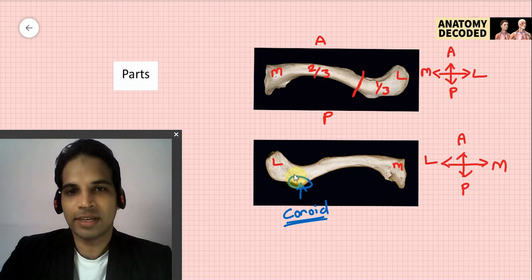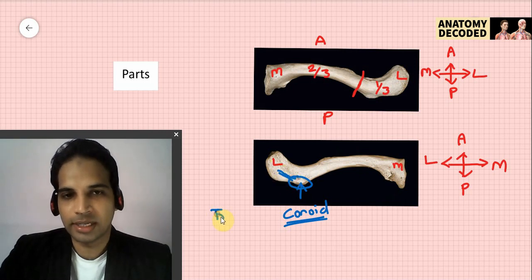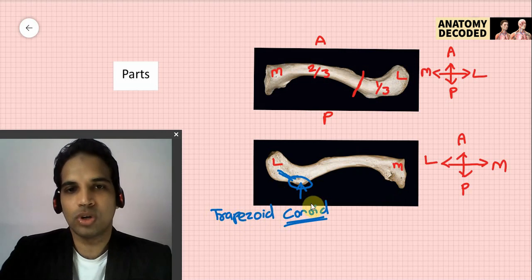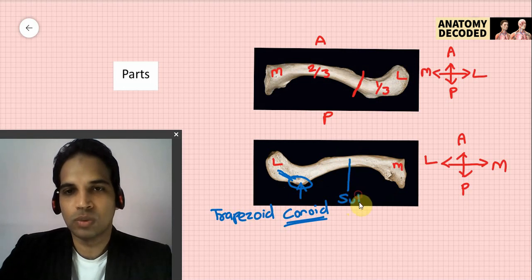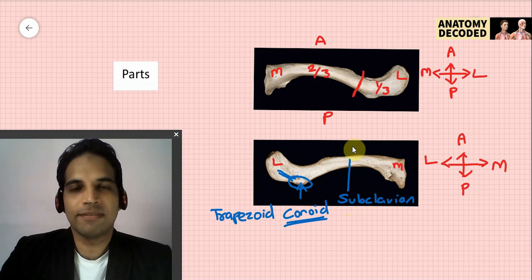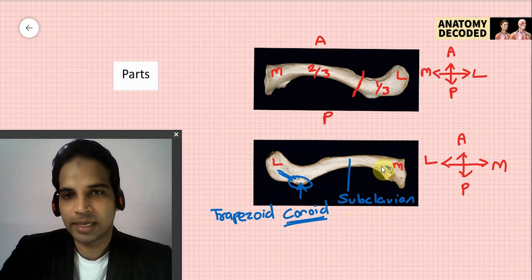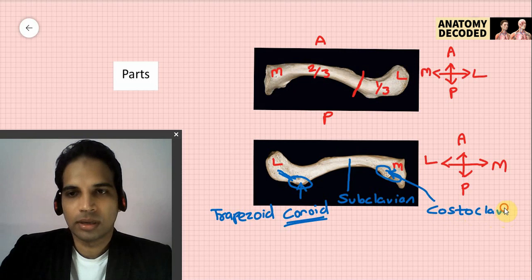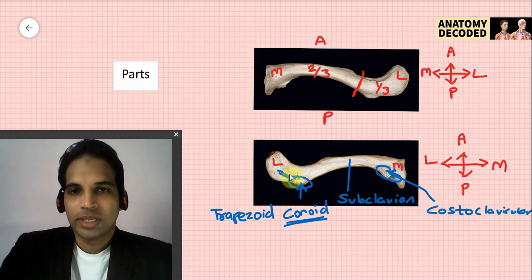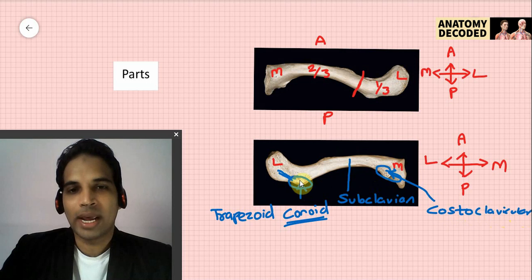On the inferior surface of the clavicle, the most important feature is the conoid tubercle. There is a ridge extending from the conoid tubercle called the trapezoid ridge. There is also a groove on the anterior surface referred to as the subclavian groove. Along the medial aspect, there is a rough oval impression for the ligament called the costoclavicular ligament. On the inferior aspect, two ligaments are attached: on the medial aspect the costoclavicular ligament, and along the lateral aspect the coracoclavicular ligament.